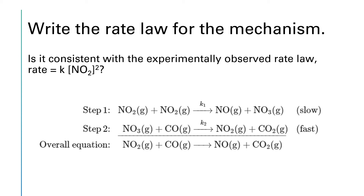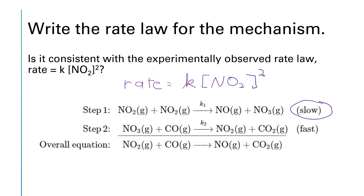We're asked to write the rate law for this mechanism and determine if it's consistent with the experimentally observed rate law: rate = k[NO2]². To write the rate law for a two-step reaction, we look at the slower step. The first step is the slow step and the second step is the fast step. Based on that slow step, since it's an elementary step, we say rate = k[NO2]², because it's bimolecular with two NO2 molecules. This matches the experimentally observed rate law, so there's a good chance this mechanism is a good description of how this reaction actually takes place step by step.